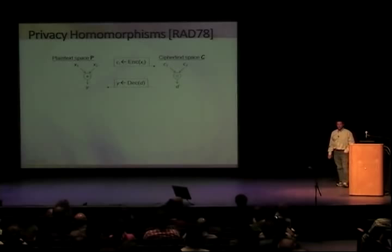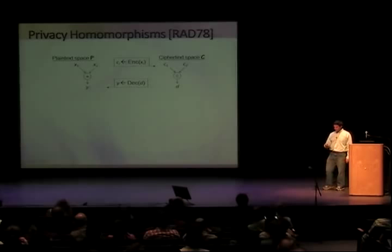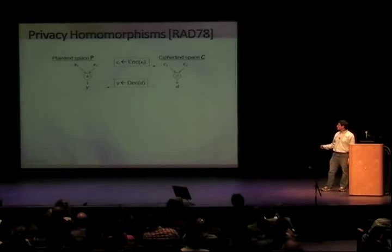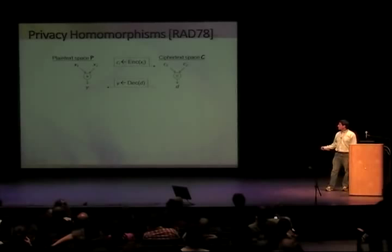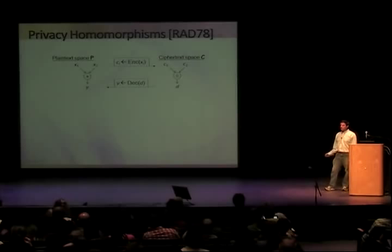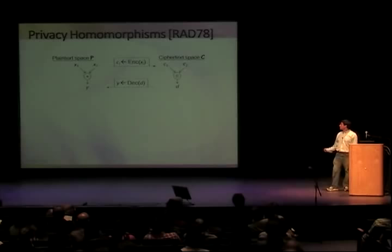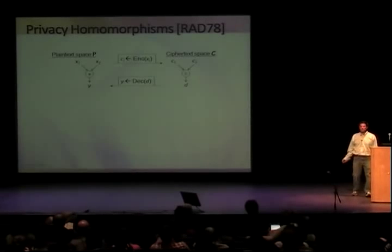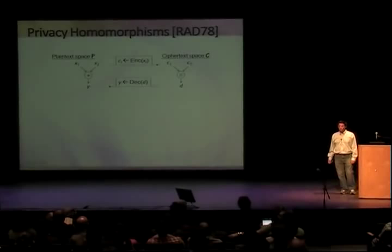The possibility of an encryption scheme like this was observed shortly after the invention of public-key cryptography by Rivest, Adleman, and Dertouzos. They proposed the notion of privacy homomorphism. The idea is: we have a plaintext space and a ciphertext space, with encryption as a one-to-many mapping and decryption as many-to-one. There's some operation we want to do on plaintext, and we'd like an equivalent operation on ciphertext such that if we take x1 and x2, encrypt them to get c1 and c2, apply this operation on the ciphertexts to get d, then decrypt d, we get y equal to x1 star x2.